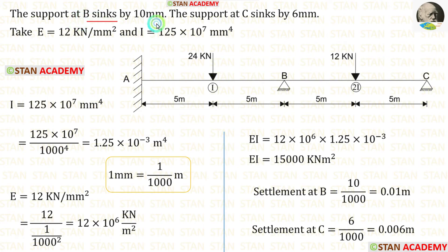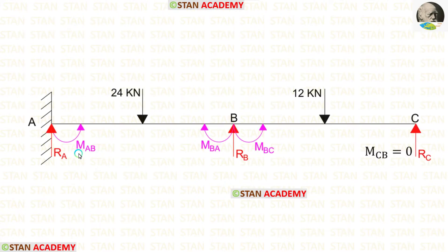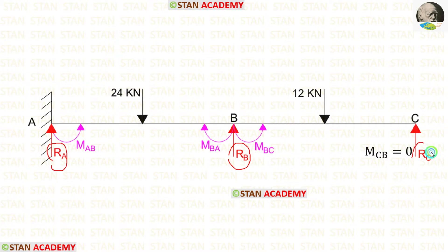The settlement at B is 10 mm; dividing by 1000 gives 0.01 m. The settlement at C is 6 mm; dividing by 1000 gives 0.006 m. In this beam, we need to find three moments: MAB, MBA, and MBC, and three reactions: RA, RB, and RC.